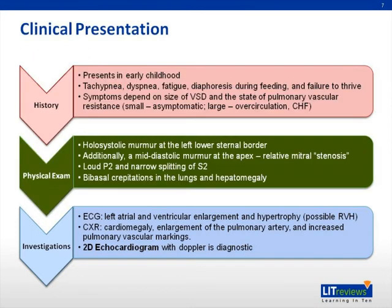On examination, a holosystolic murmur at the left lower sternal border is classic for VSD. Additionally, a mid-diastolic murmur may be heard at the apex due to the increased volume of blood flowing across a now relatively small mitral valve. If pulmonary arterial pressures have begun to increase, a loud P2 and narrow splitting of S2 may be present. Bibasal crepitations in the lungs and hepatomegaly may also be observed due to fluid over-circulation.